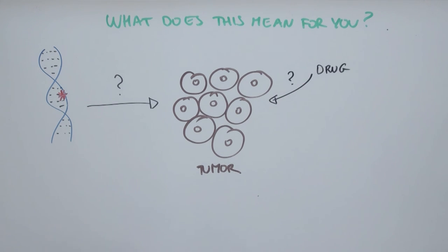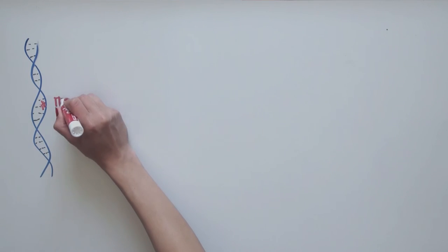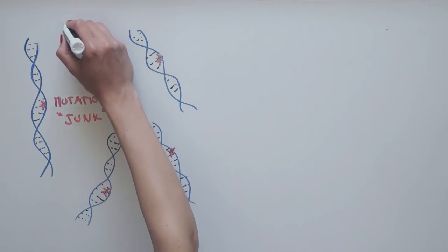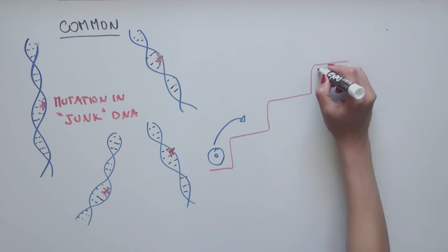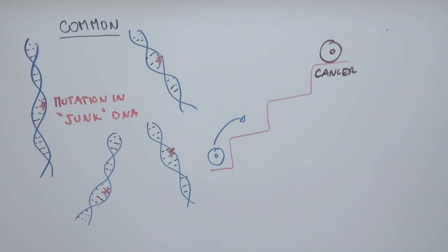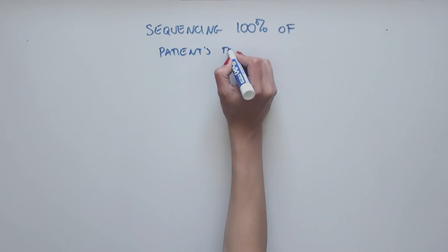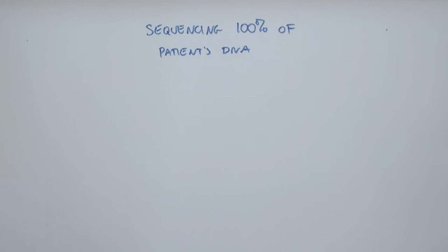It's surprising that mutations in what was seen as junk DNA can be so common and so important to driving cancer development. So as you can tell, sequencing 100% of patients' DNA in a cost-effective way has and will continue to provide clues as to the cause of many diseases, in this case melanoma.